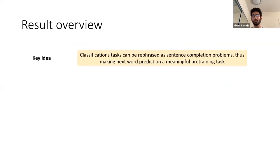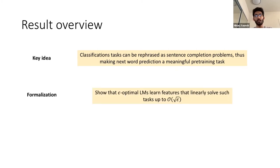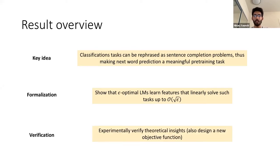The key contributions towards answering this question are the following. First, we observe that many classification tasks can be rephrased as sentence completion problems. Once we do that, it makes sense to try to predict the next word, and you can see why next-word prediction pre-training can be a meaningful task. We then formalize this into a mathematical statement. Done the right way, you can show a precise bound: an epsilon-optimal language model in the cross-entropy objective can learn features that can linearly solve such tasks up to an error of square root epsilon due to suboptimality. We also try to verify the theoretical insights and assumptions, and we design a new objective function based on these theoretical insights.